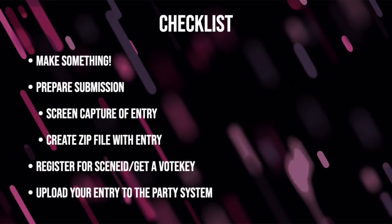Let's take a look at the checklist for submitting something to Lovebite. First thing: make something. Hopefully you have that done and now we're going to talk about preparing the submission. There are two aspects: a screen capture of your entry and creating the zip file. After that we'll look at registering for the party system — the website that allows us to upload and vote on entries — and then we'll upload our production to the party system.